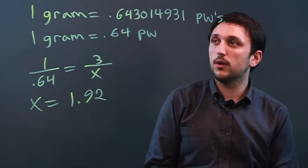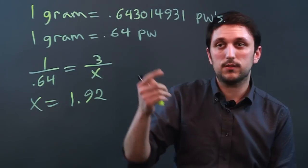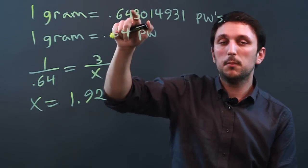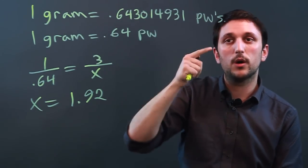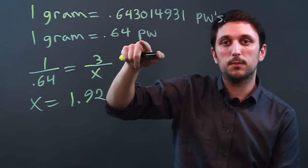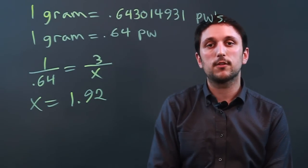So that is how you convert grams into penny weights, and that one gram equals 0.643014931 penny weights, which you can round to 0.64. I'm Charlie Kasov. Thanks a lot.